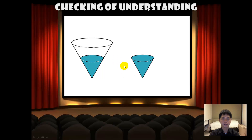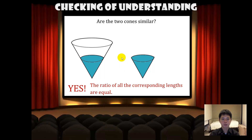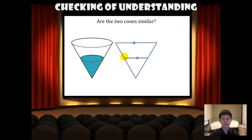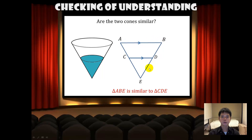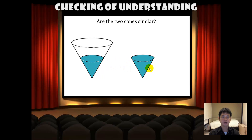What about these two cones — are they similar? The answer is yes, because the ratio of all the corresponding lengths are equal. Looking at it in two dimensions, triangle ABE and triangle CDE are similar by the AAA similarity test. Since these two triangles are similar, the ratio of all their corresponding lengths are equal, and hence these two cones must be similar as well.